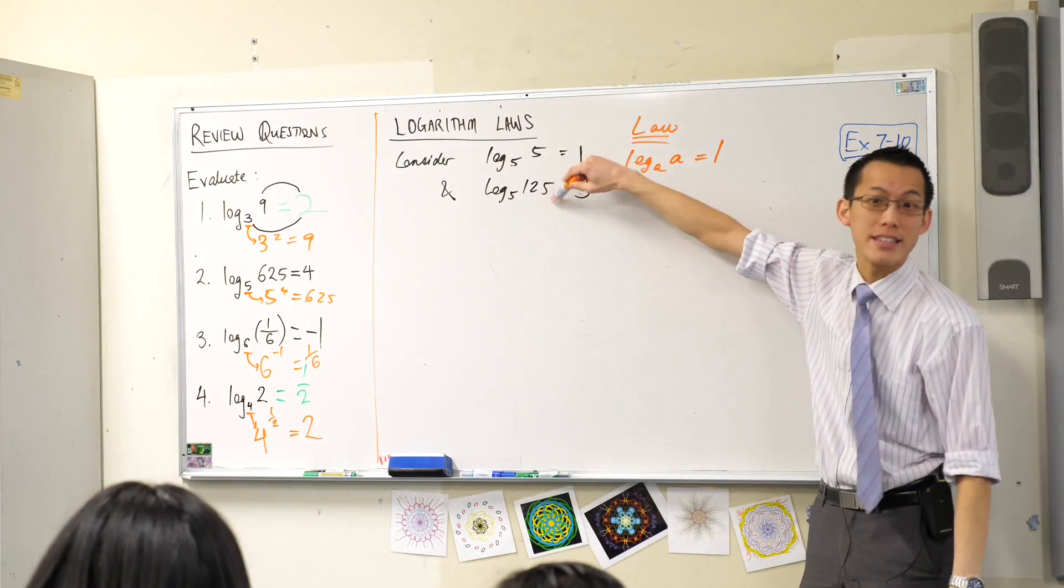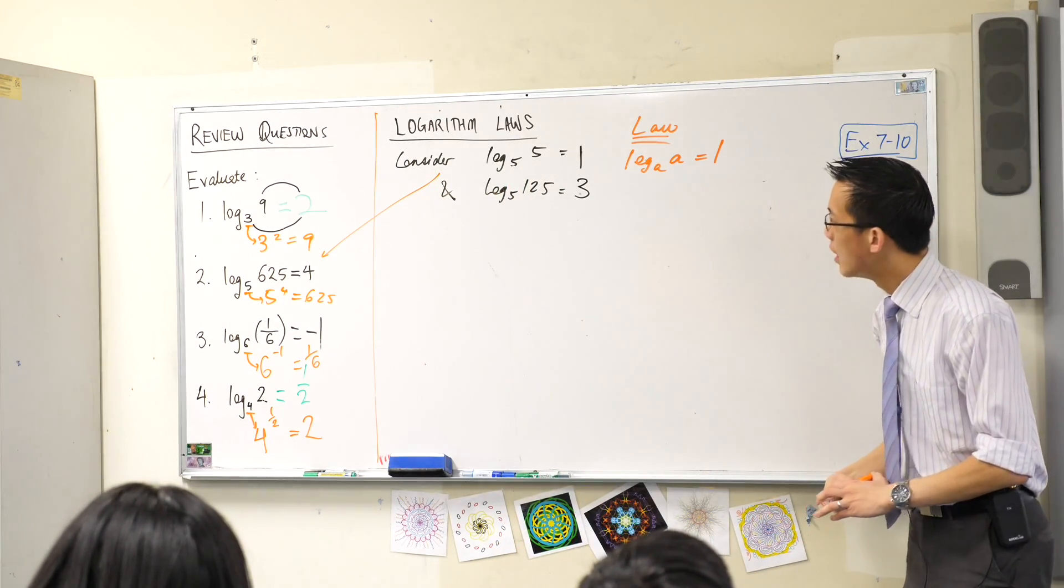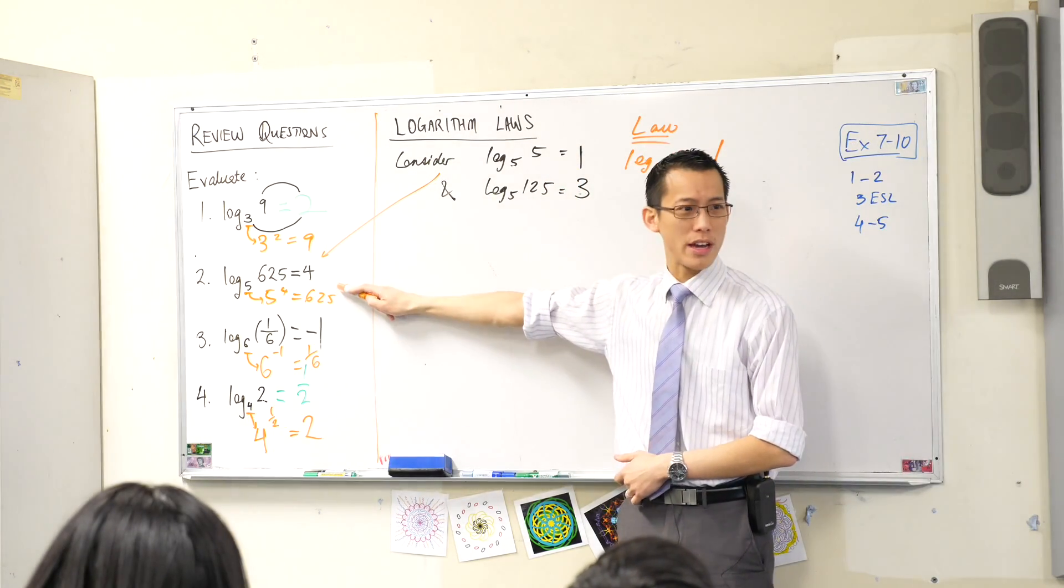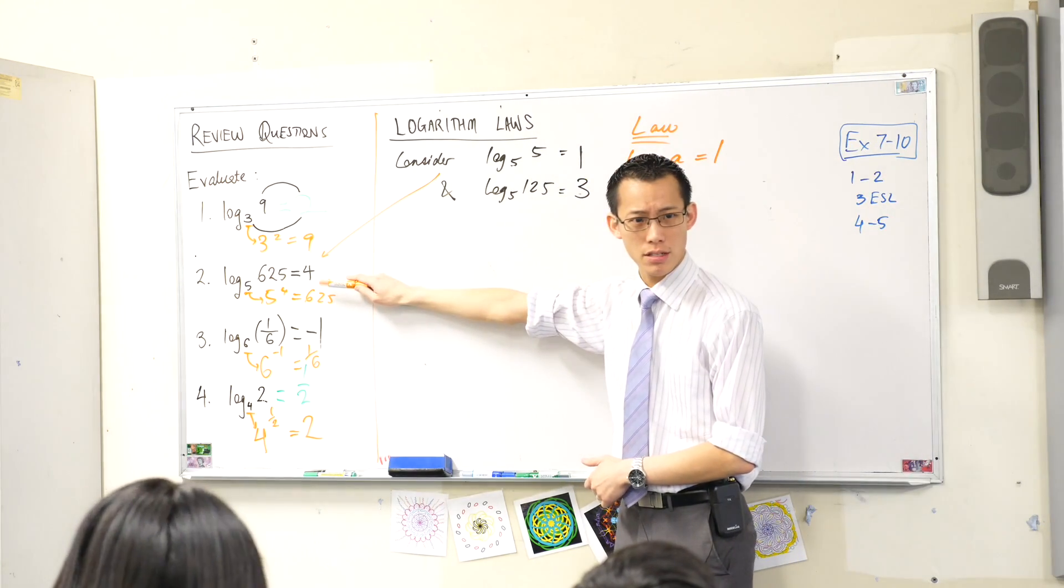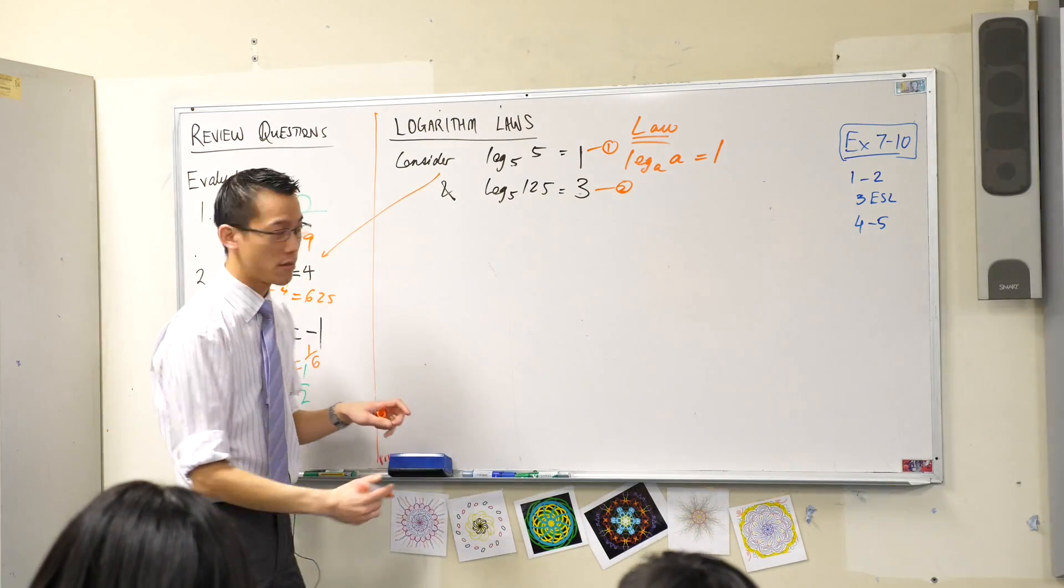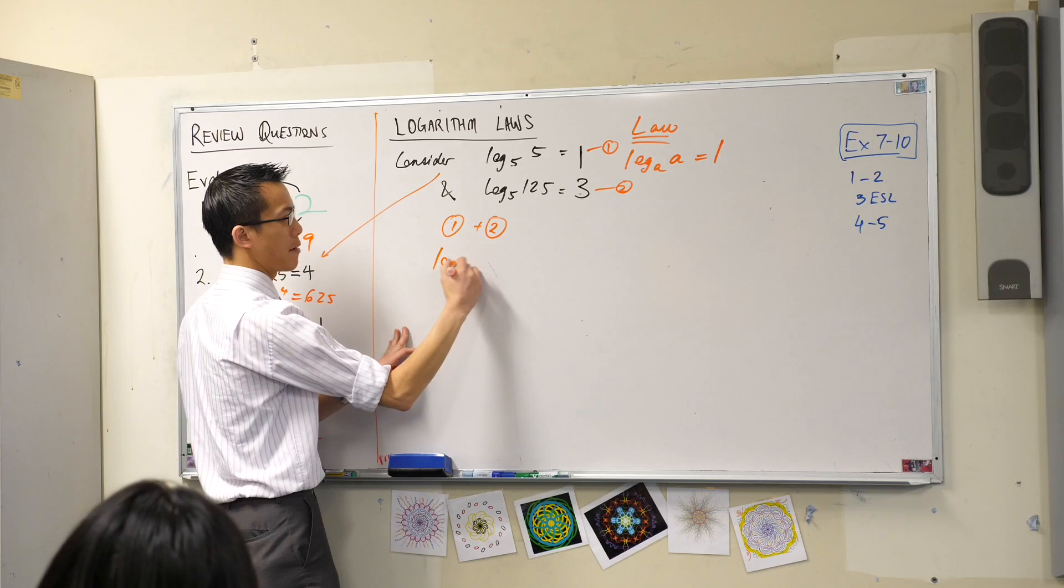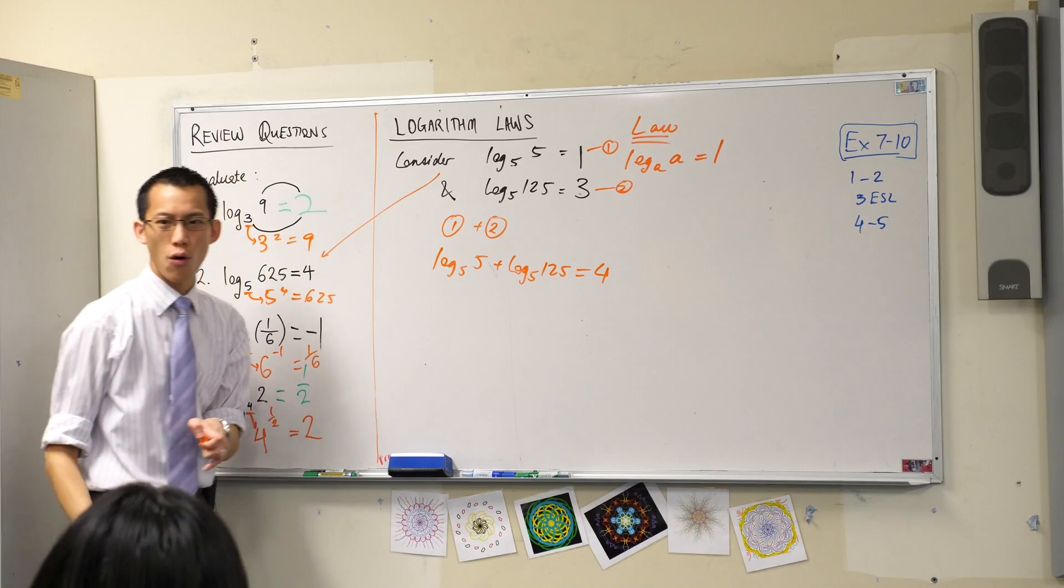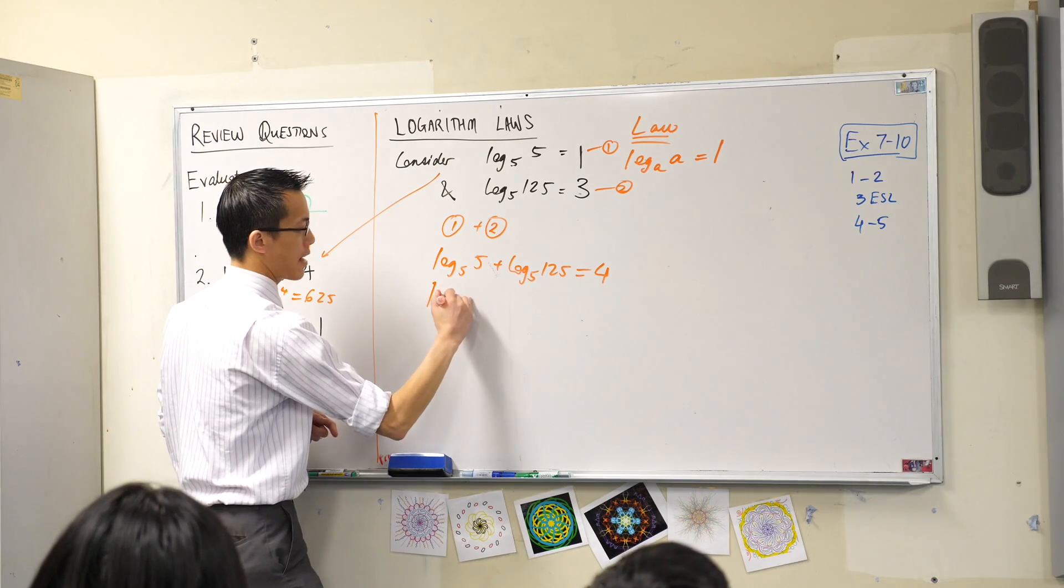We're going to develop another law as we consider both of these together now and how they relate to this. Do you see that if I add these two equations together, I get this equation. Do you notice that? If I add these two on the left and add them on the right, I get this. Do you see that? So what I want us to do, let's just label these equation 1 and equation 2. If I add equation 1 and 2, then I will find this. Log base 5 of 5, log base 5 of 125, that's 4. But 4, you already told me, was this, right? So from that I gain this.